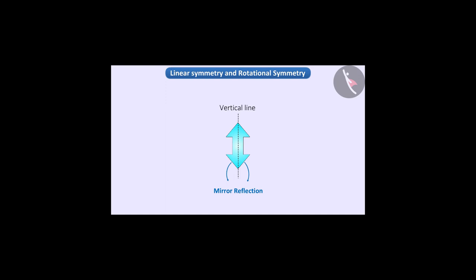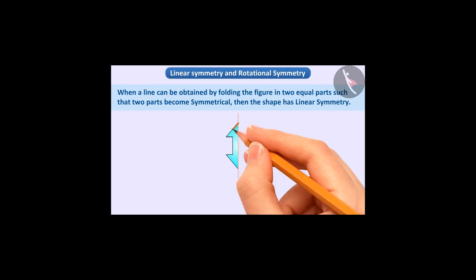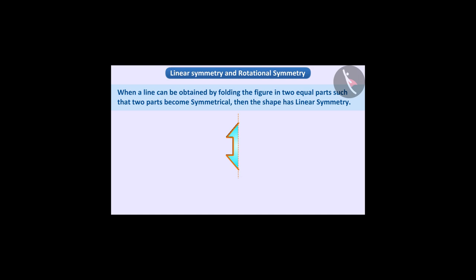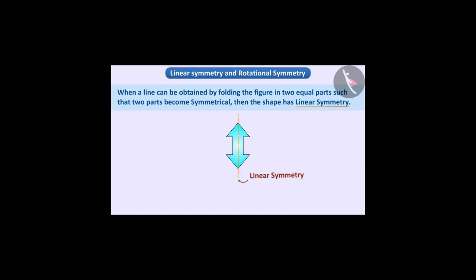That is, they match each other very accurately. When a line can be obtained by folding the figure into two equal parts such that the two parts become symmetrical, then the shape has linear symmetry. Therefore, this shape has linear symmetry — that is, this shape is symmetric.